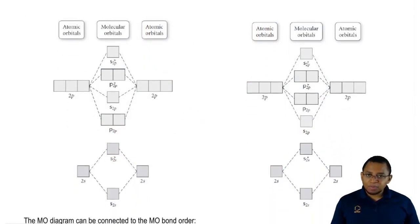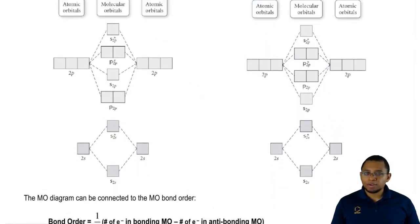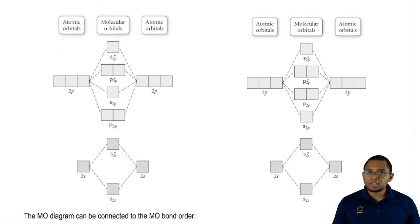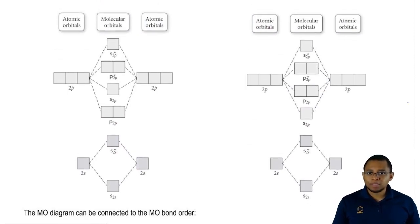Remember, we say that there's VSEPR theory and then there's molecular orbital theory. Molecular orbital theory uses these molecular orbital diagrams in order to write the electron configurations of these diatomic compounds.